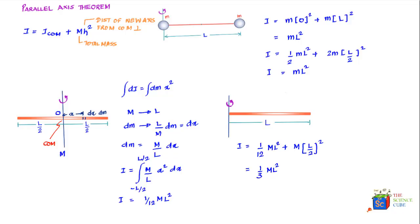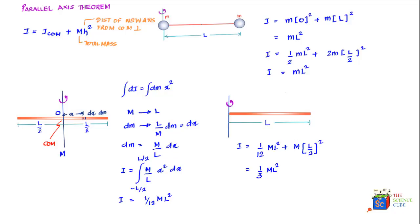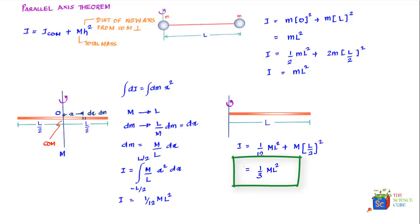Interestingly, the moment of inertia about the end axis is four times that about the center axis. This is because when the axis is at the end, more mass is distributed farther from the axis of rotation compared to the center case, where mass is evenly distributed on both sides. More mass at larger distances means higher values of mr², resulting in a greater moment of inertia.